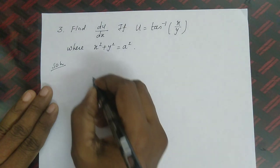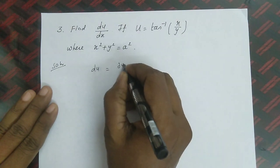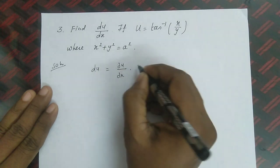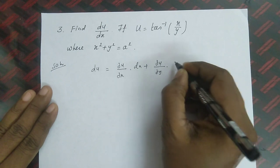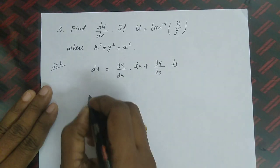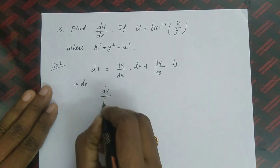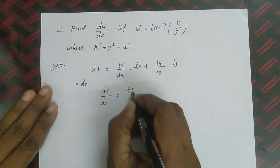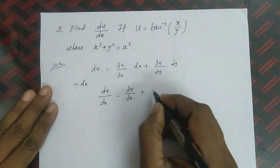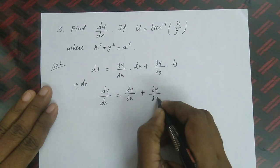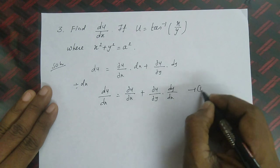By the same method, from the total differential coefficient: du = (∂u/∂x)dx + (∂u/∂y)dy. Dividing by dx: du/dx = ∂u/∂x + (∂u/∂y)(dy/dx) — call this equation 1.